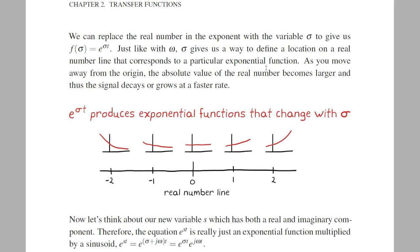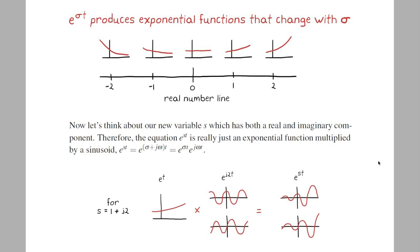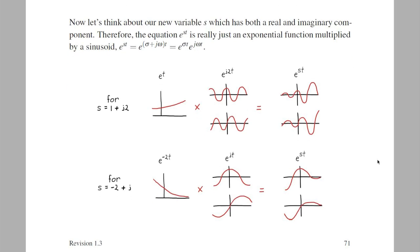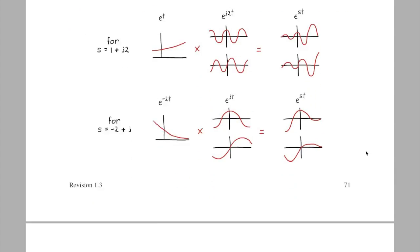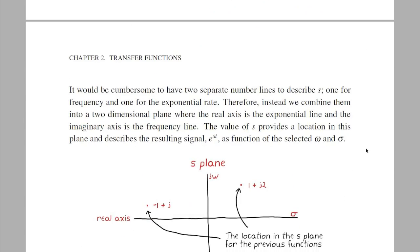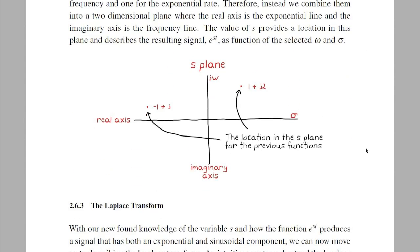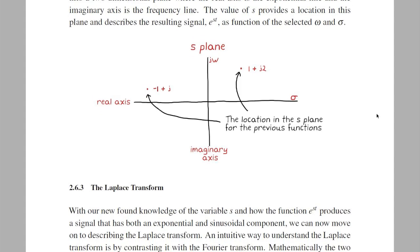Now negative sigmas give us decaying functions, and positive sigmas give us growing functions. The larger the number, the faster they grow or decay. So what does that mean for s? Well, e to the st has an exponential component and a frequency component, so that for a given s, we can create signals that are combinations of the two. Now instead of a single-dimensional number line like we had with just omega, s exists on a two-dimensional number plane, which we call the s-plane. The real dimension is sigma, and the imaginary dimension is omega. At this point, we can move on to the Laplace transform because it uses the variable s.